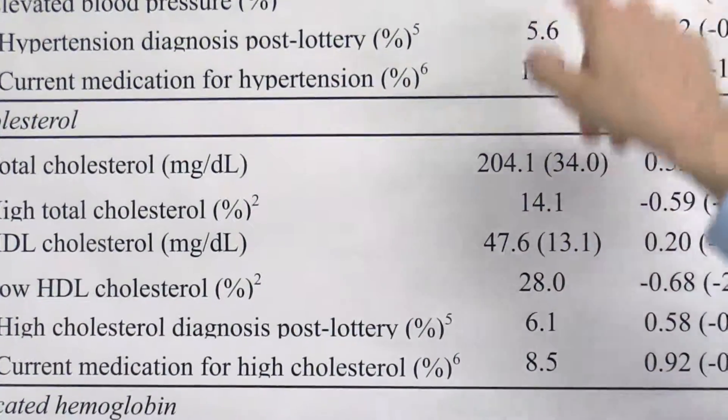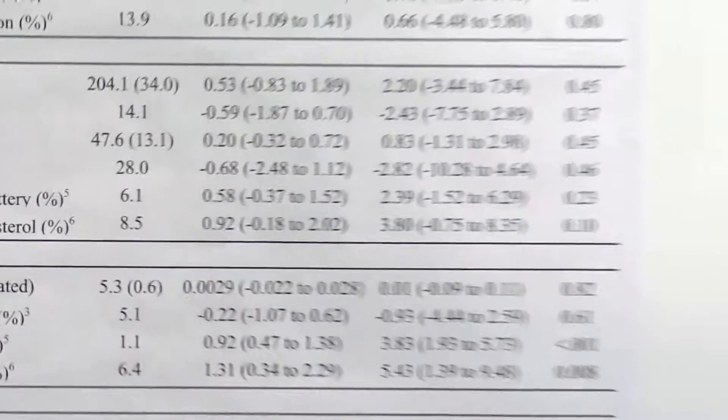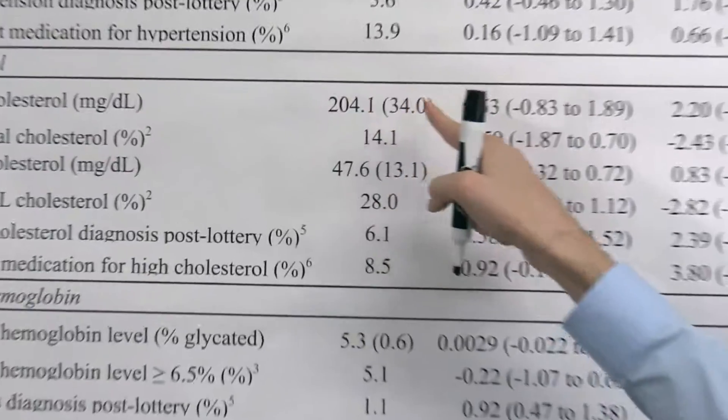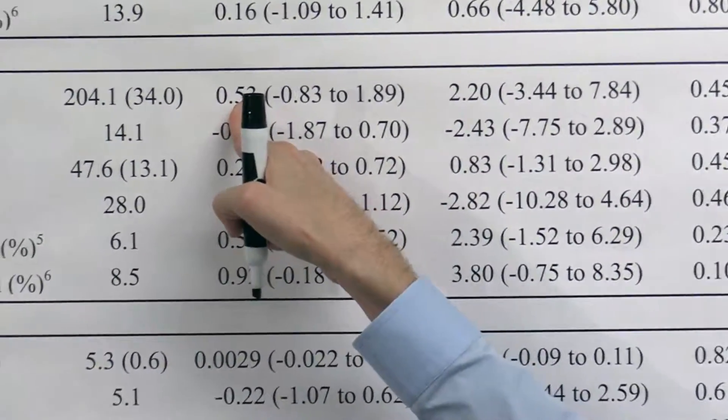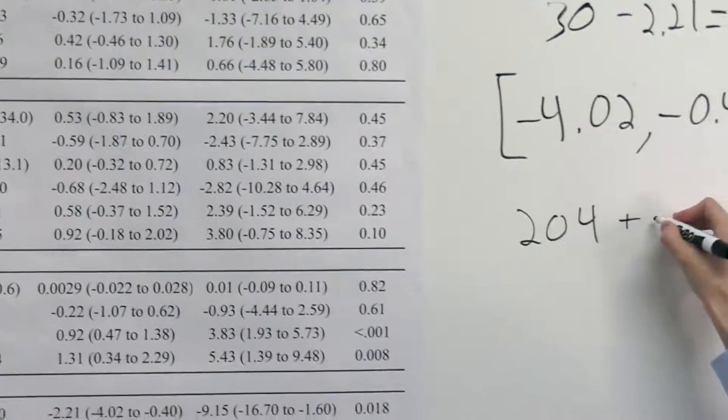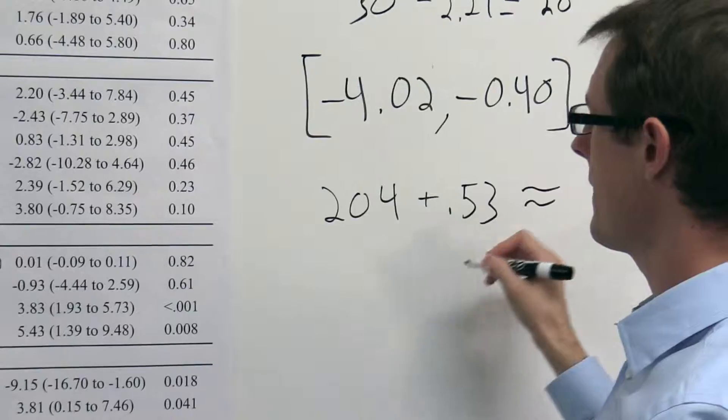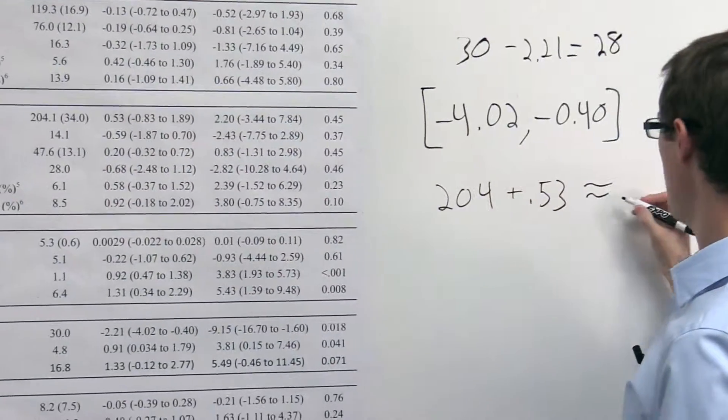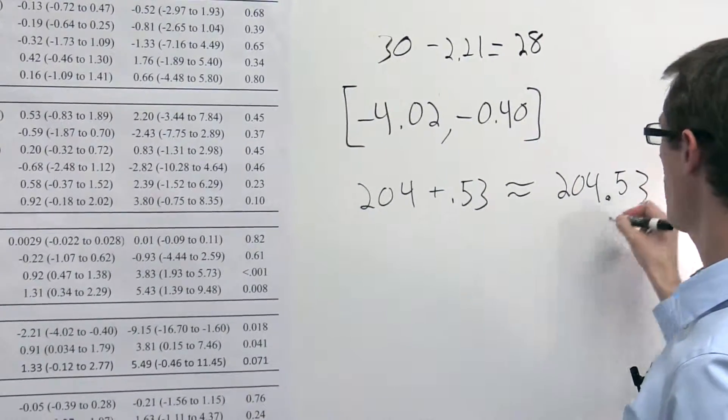So here, the average value of total cholesterol in the control group is about 204, and the treatment effect is 0.53, positive. So that means that the average outcome in the treatment group is about 204.53.